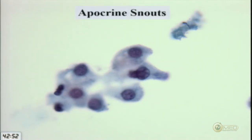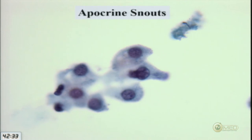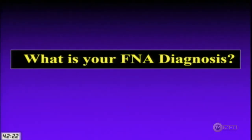On a liquid-based preparation of the salivary gland FNA, we again have bland, loosely cohesive cells. Some of these cells had little snouts on them — reminiscent of apocrine change. It's a very strange combination: epidermoid cells, secretions, something that looks cystic, clear cells, and apocrine cells.